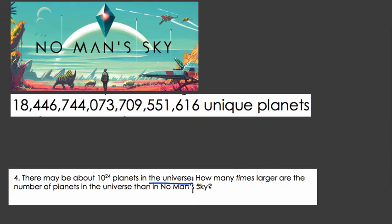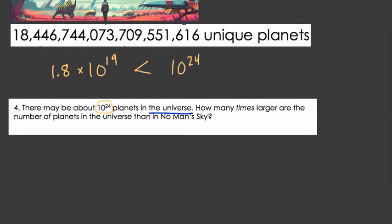So here, let's assume that we have about 10 to the 24th planets in our universe. How does this compare to the number of planets in No Man's Sky? Well earlier on we estimated this number to 1.8 times 10 to the 19th, the number of planets in No Man's Sky. And we're saying how does it compare to 10 to the 24th? Well 10 to the 24th of course is larger. This question is saying how many times larger.